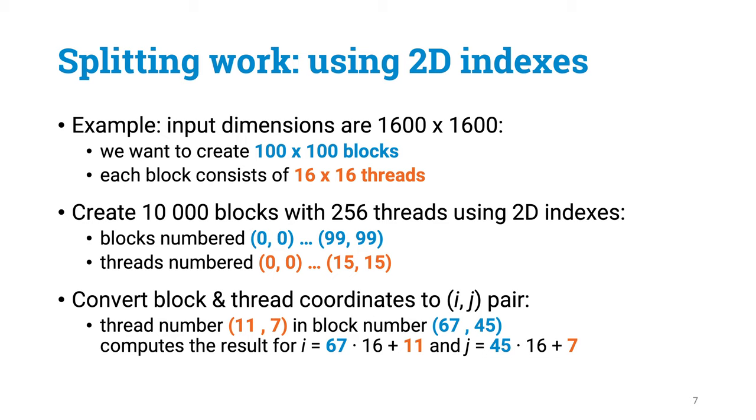So we won't anymore have a thread 123. It will be thread with coordinates 11,7. And now, once you see the block index and the thread index, it's a bit more straightforward to figure out what would be the corresponding i, j pair that this thread is responsible for computing.